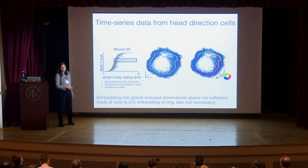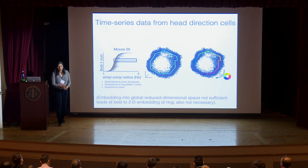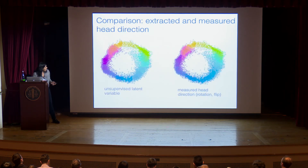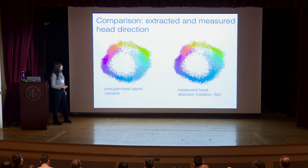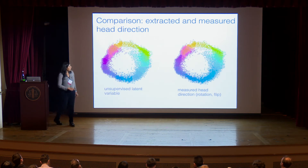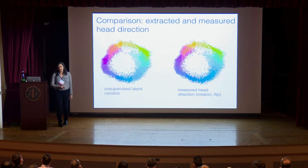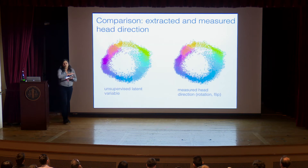We can fit a one-dimensional curve to this manifold and parametrize it, obtaining a one-dimensional variable that the data appears to encode. We can read off values of this variable to extract an estimate of this angular code. We then color the points according to this parametrization — this is our unsupervised latent variable estimate. Comparing this to the same data colored by the actual measured head direction of a mouse running in an enclosure, the colors match very well indeed — with only an arbitrary origin and direction offset.